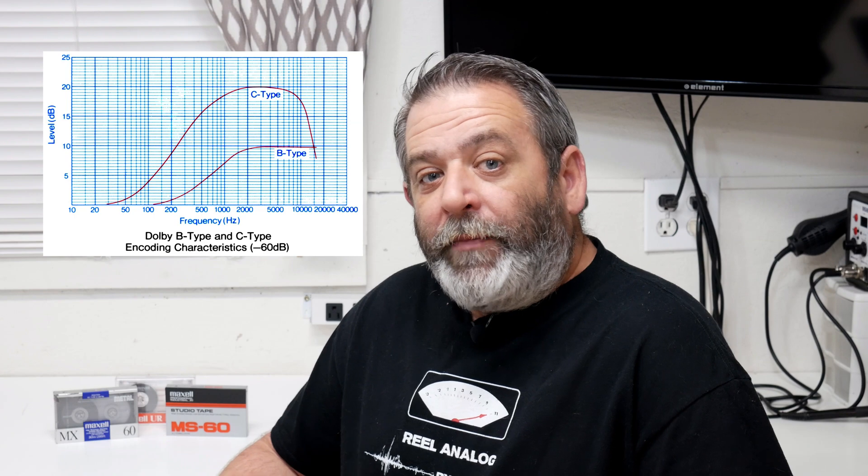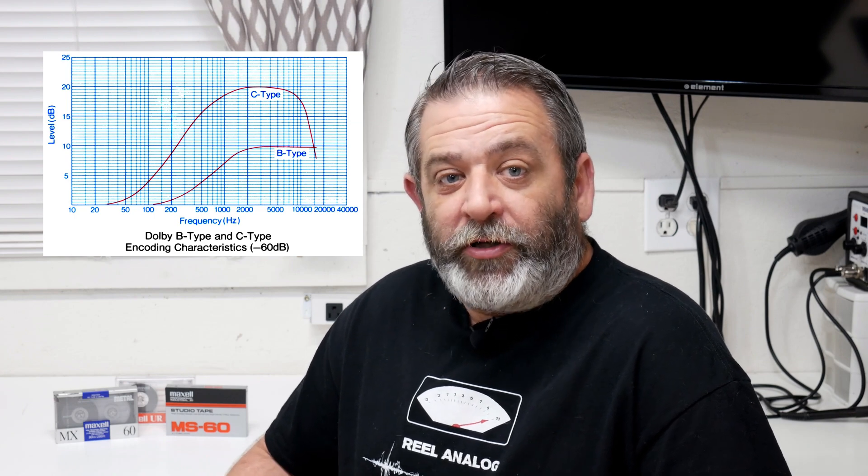Dolby B noise reduction was developed after Dolby A, which was the professional system used in recording studios, and Dolby B was introduced in 1968. It consisted of a single sliding band system and provided about nine decibels of noise reduction. It was primarily developed for use with cassette tapes. It was much simpler than Dolby A, and therefore a lot less expensive to implement, especially in consumer products.